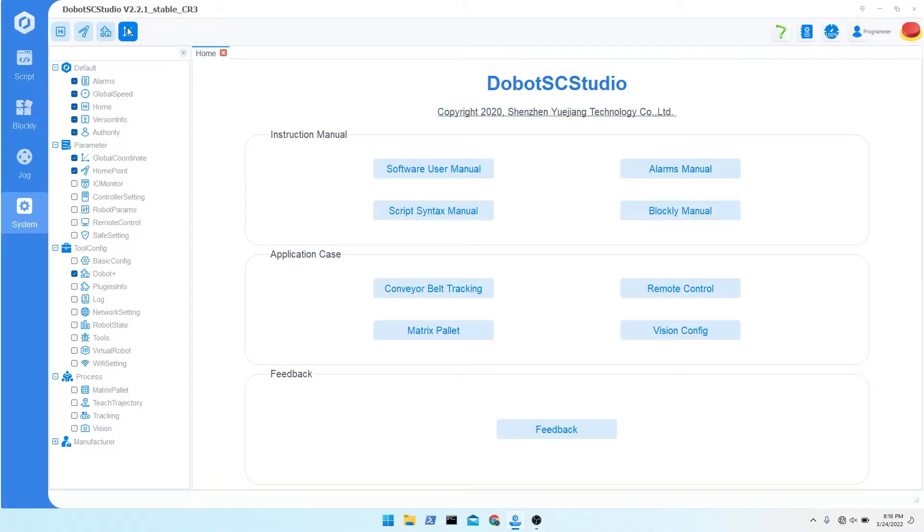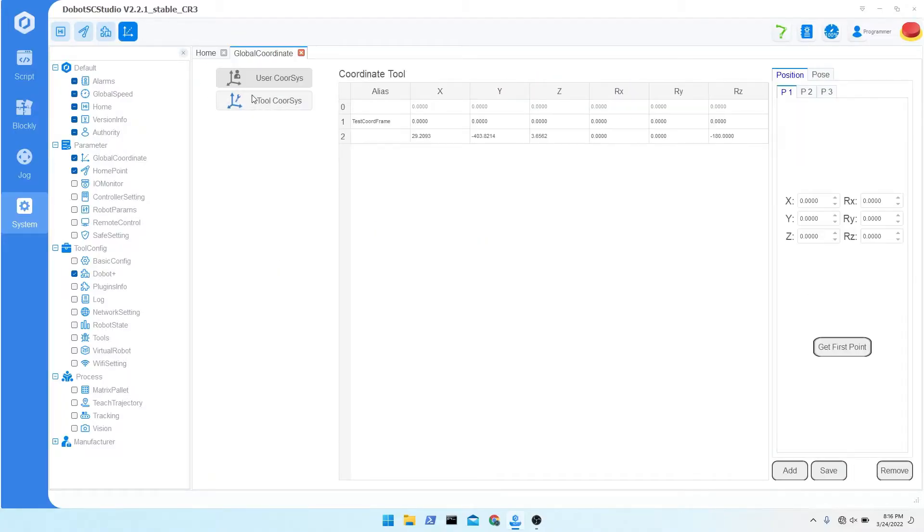In SC Studio, go to Settings, Parameter, Global Coordinate, Tool Coordinate System. Here you will see a list of coordinate systems on the left and a calibration menu on the right.